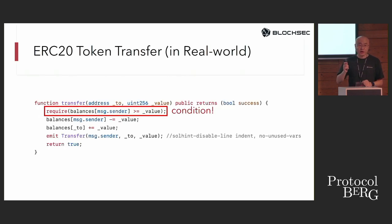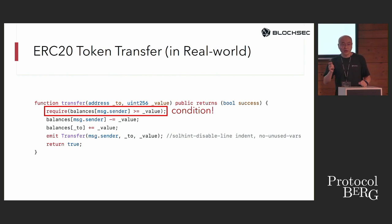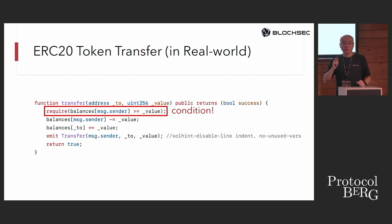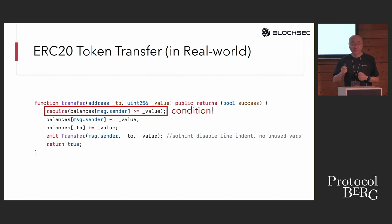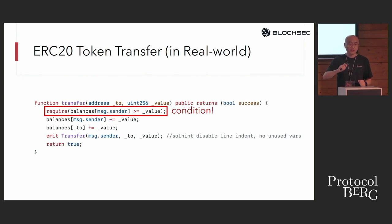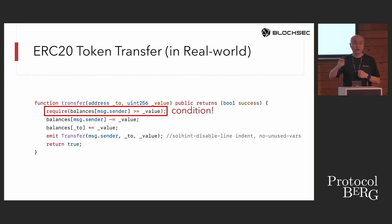Let's look at real-world conflicts using ERC-20 token smart contracts as an example. In an ERC-20 token transfer, we check the balance of the message sender to ensure they have enough balance to transfer. If multiple transactions transfer tokens from the same account, this creates a large number of conflicts, because they are all reading the same state from the same account.